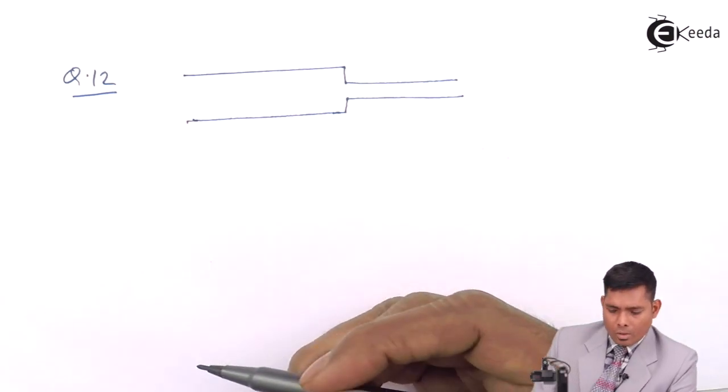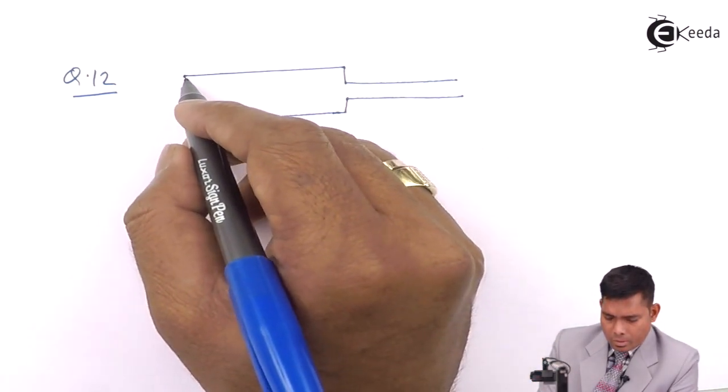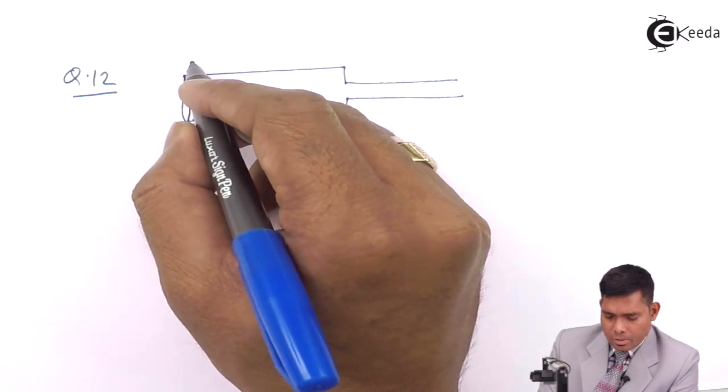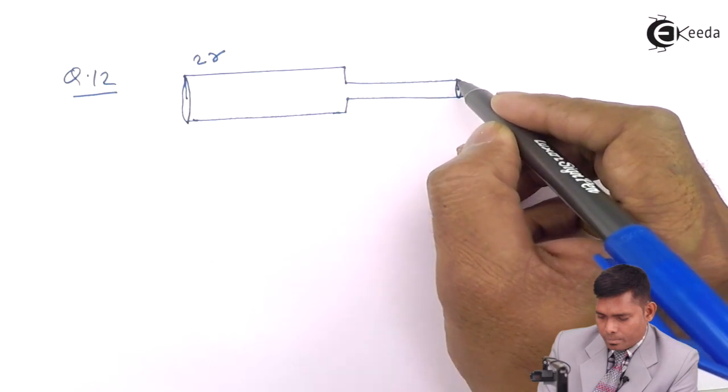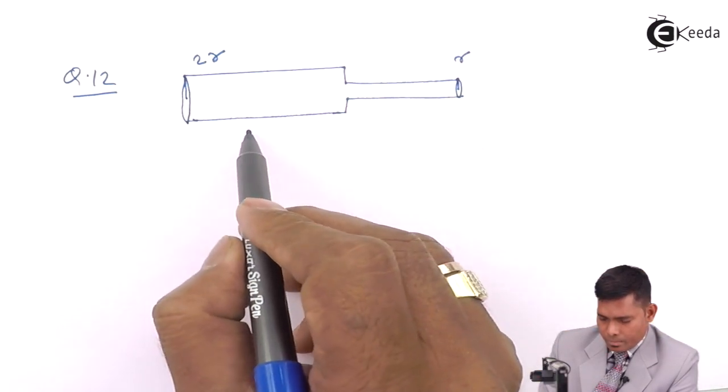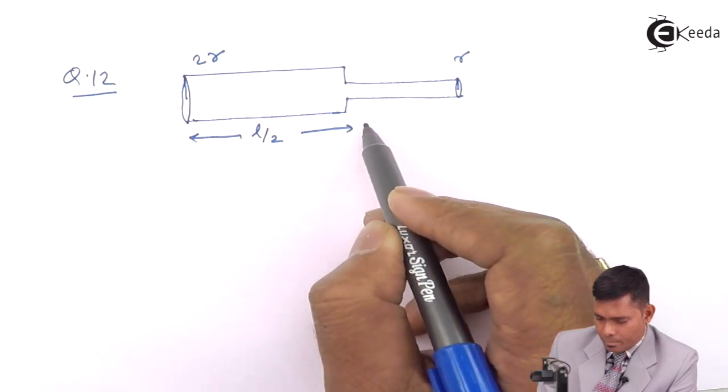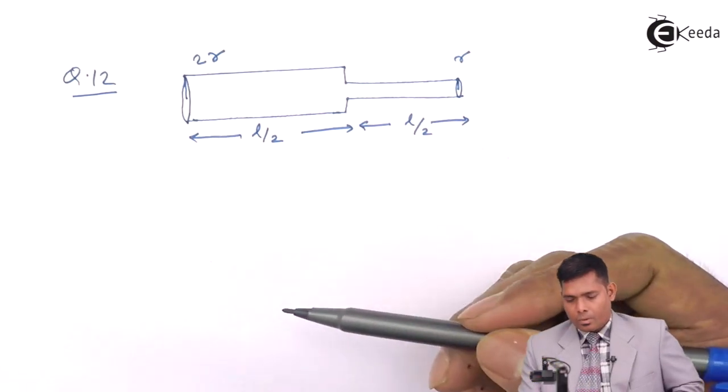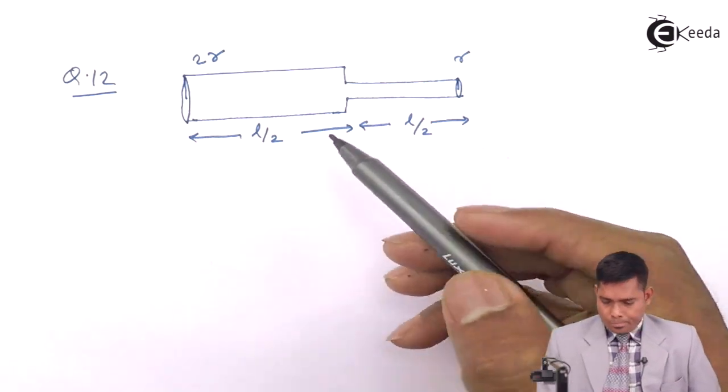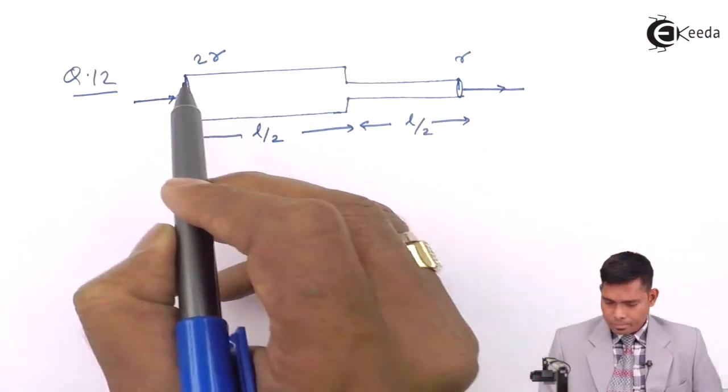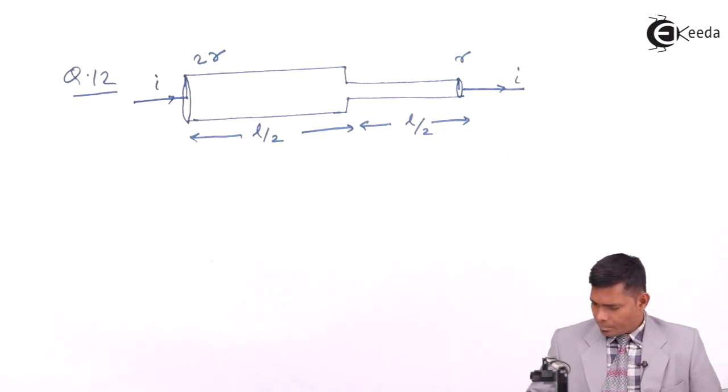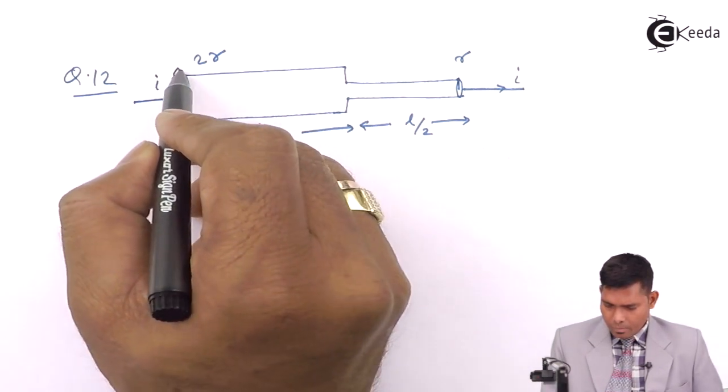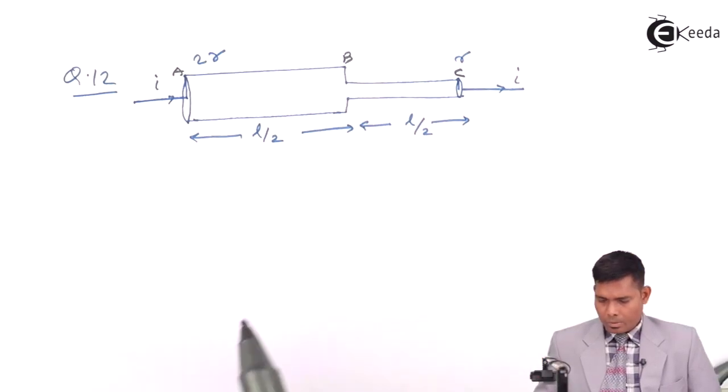This is a conductor. The radius of this is 2R. The radius of this is R.